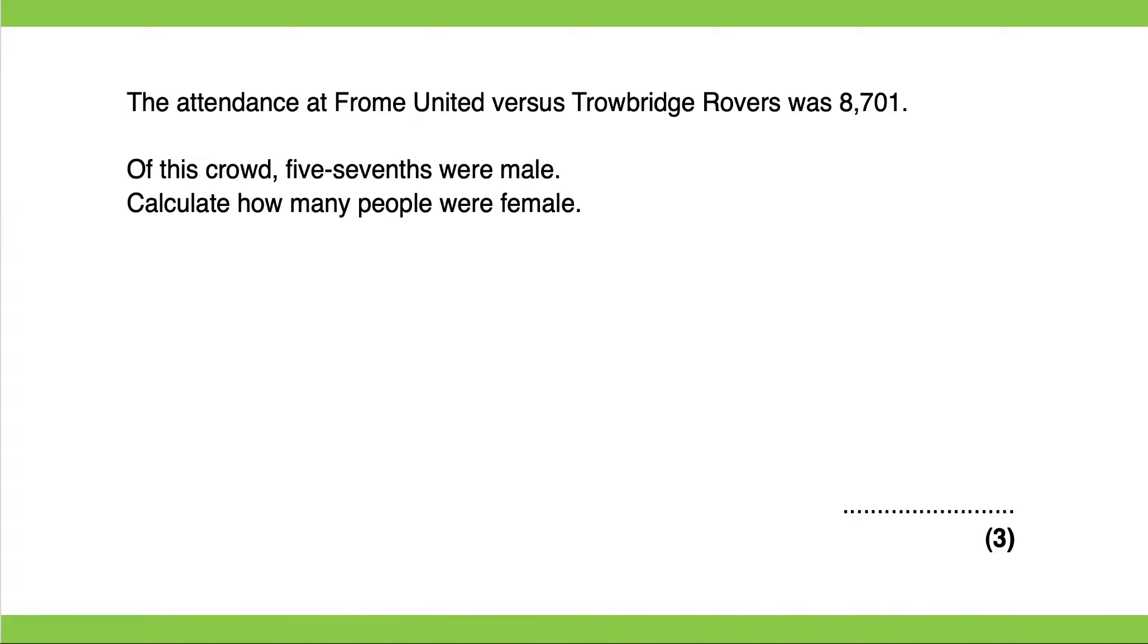Okay, final question now. The attendance at Frome United vs Trowbridge Rovers was 8,701. Of this crowd five sevenths were male. Calculate how many people were female. So if five sevenths of the crowd are male, then it's quite obvious that two sevenths of the crowd are female.